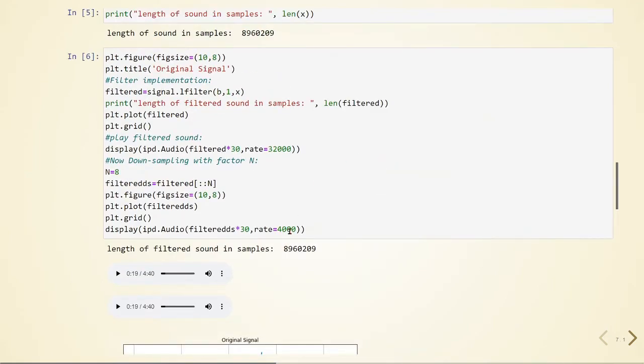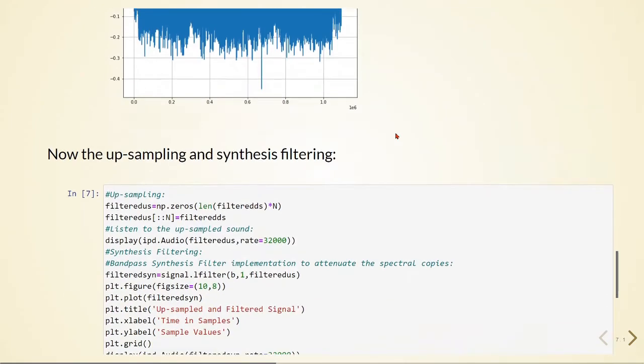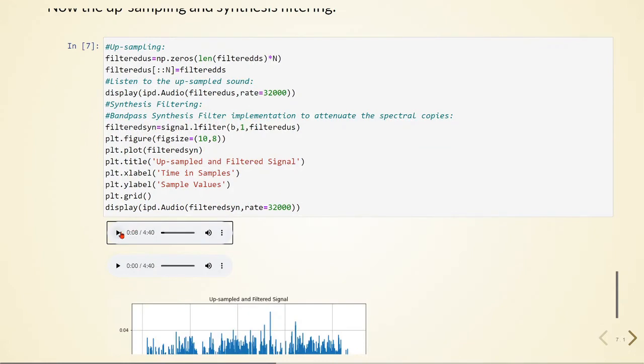So we inserted zeros. It was in 4 kHz, we inserted zeros, it goes back to 32 kHz. But it sounds with all these artifacts and aliasing components.